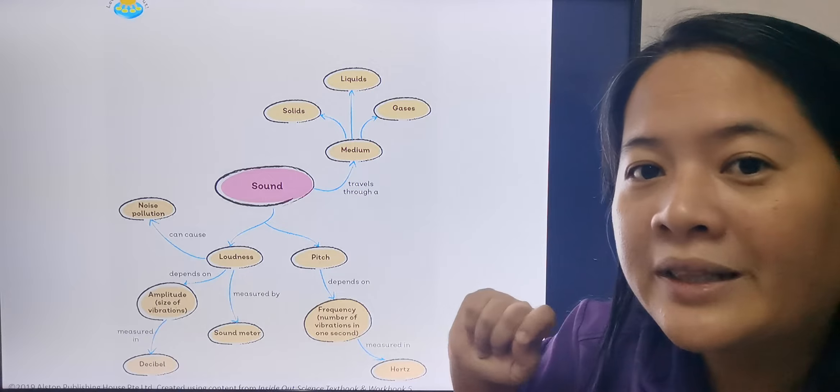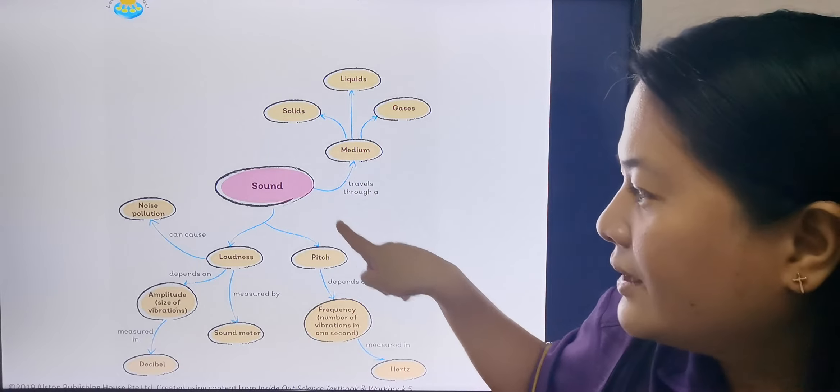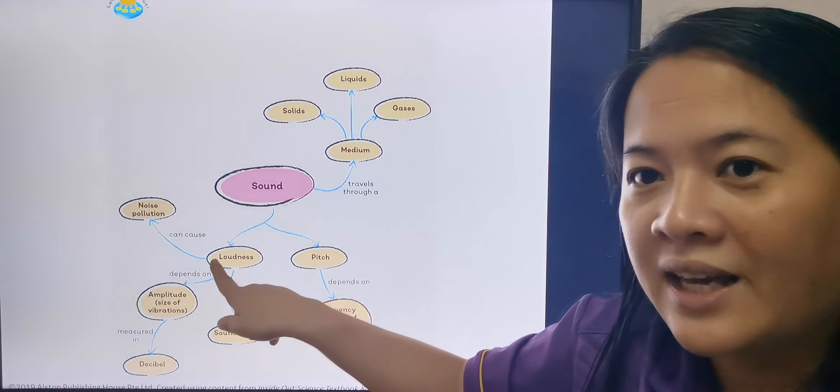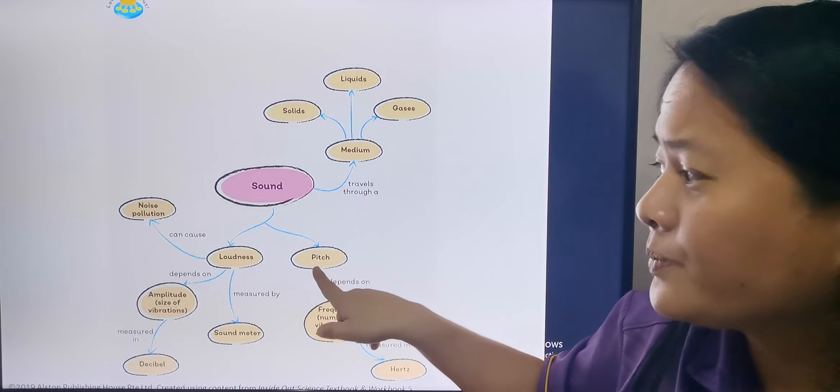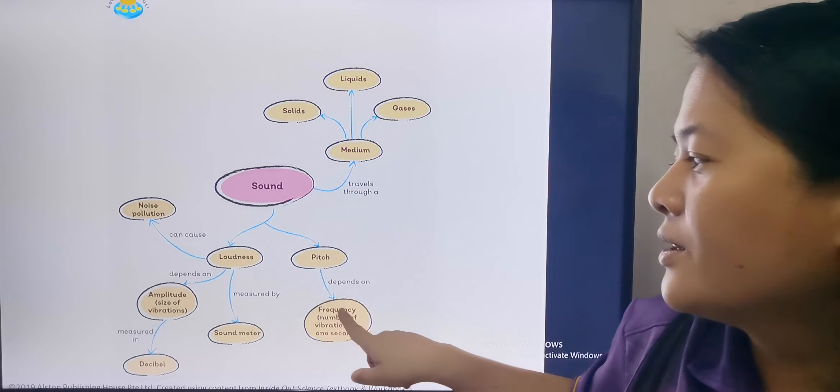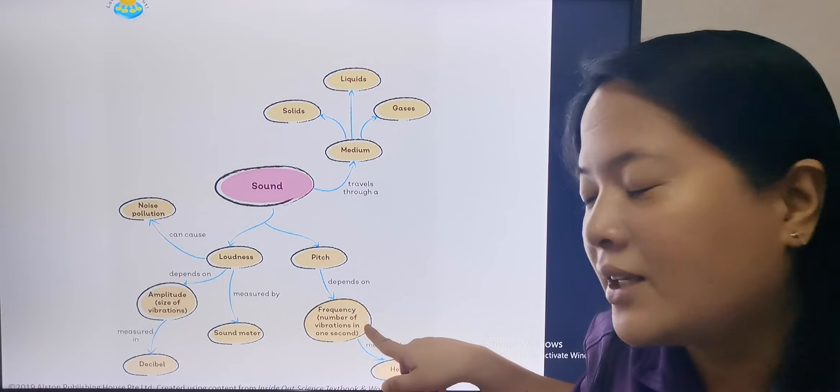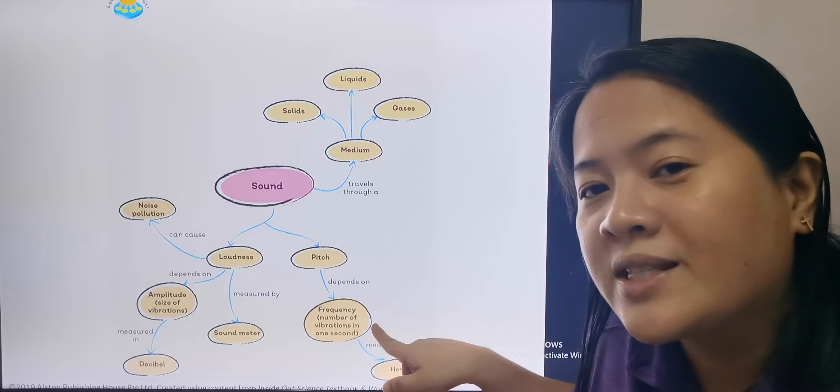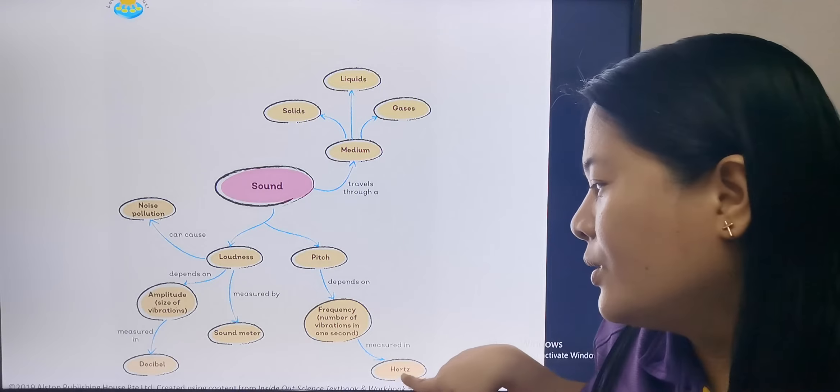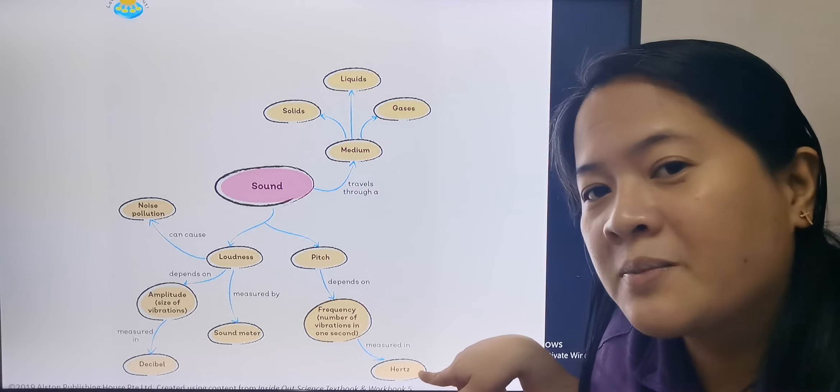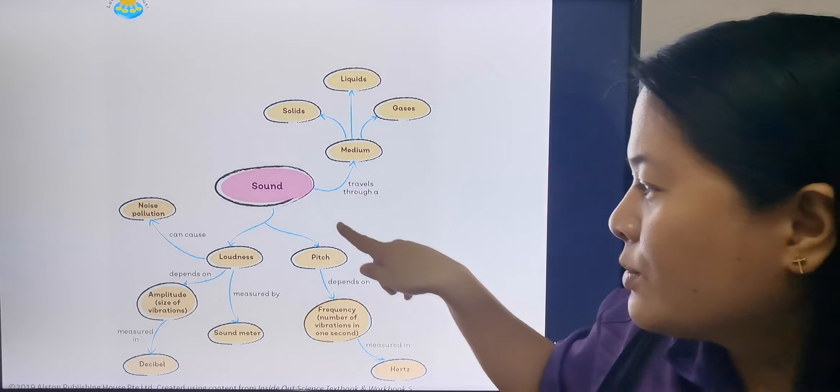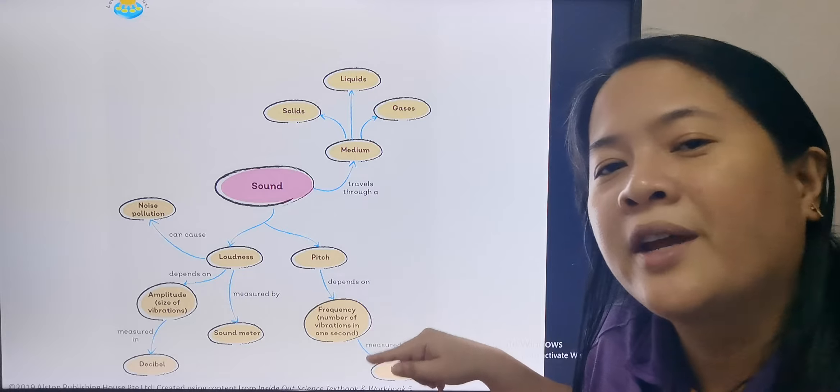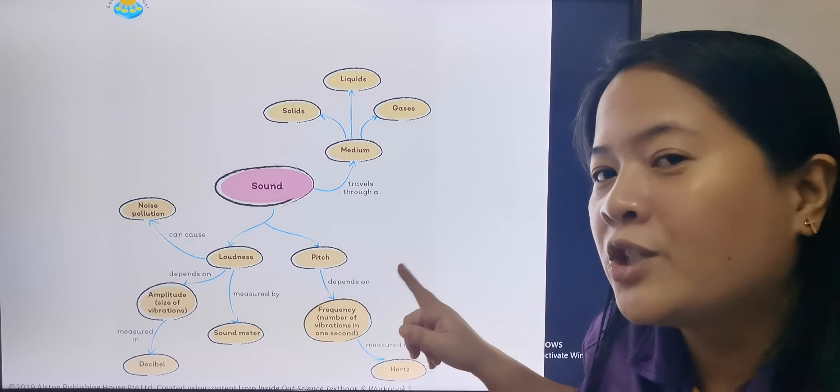We said that there are two properties of sound: we have the pitch and the loudness. Okay, so we start with pitch. Pitch depends on the frequency. Frequency is the number of vibrations in one second, and its unit is hertz—it's measured in hertz. For this one, you just be familiar with the ranges, okay? So what's the range of humans? What's the range of other animals?